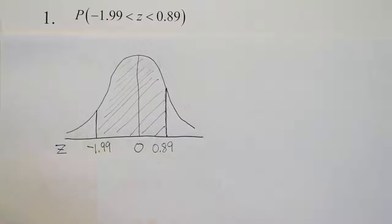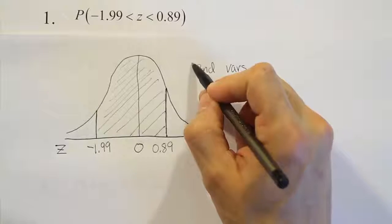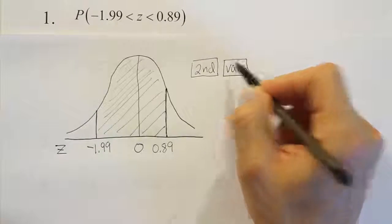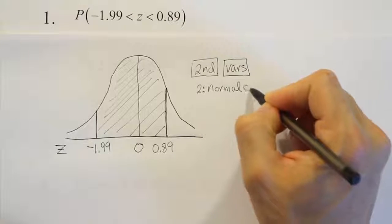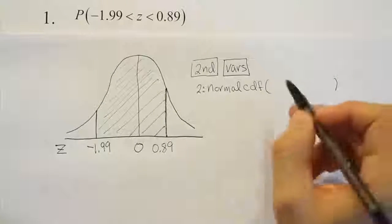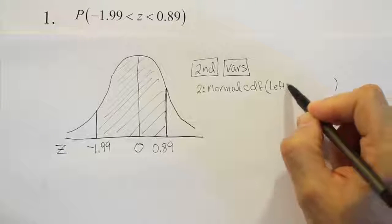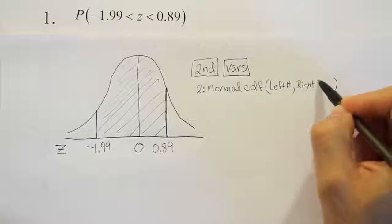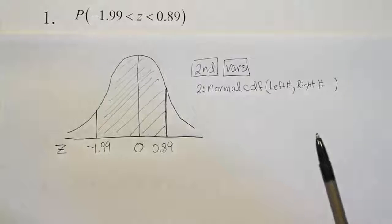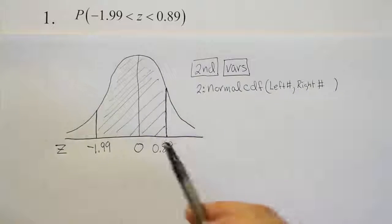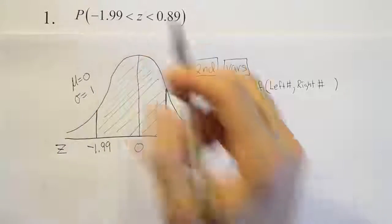Now once we have that we're ready to use our calculator. We're going to press Second then the VARS key, then take option 2 which is Normal CDF. When we have that, we enter a series of values: the left bound, then the right number. For a z scenario, you don't need to give the calculator anything more, but in general it also wants the mean and standard deviation. If you don't enter them, it assumes mean = 0 and standard deviation = 1, which is exactly the standard normal curve.